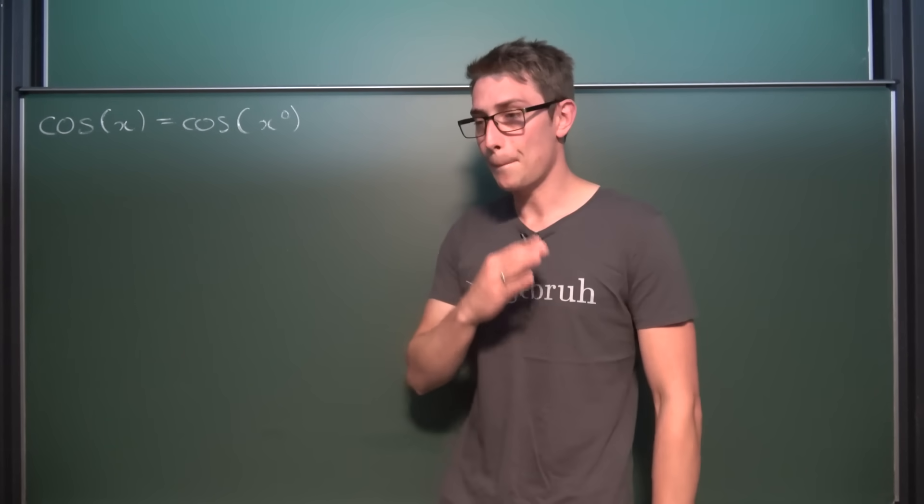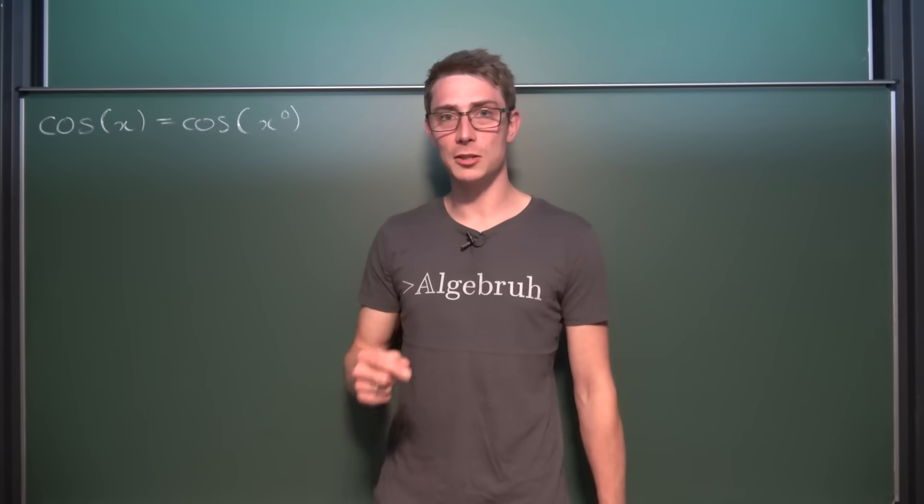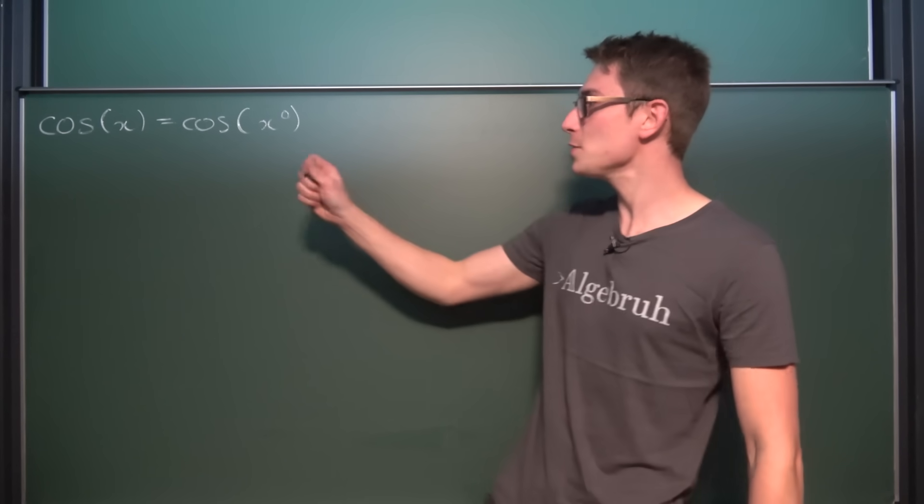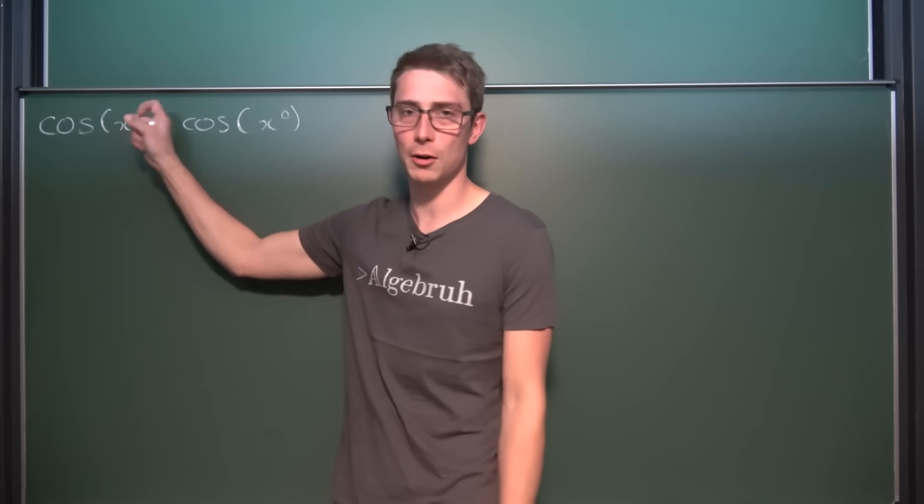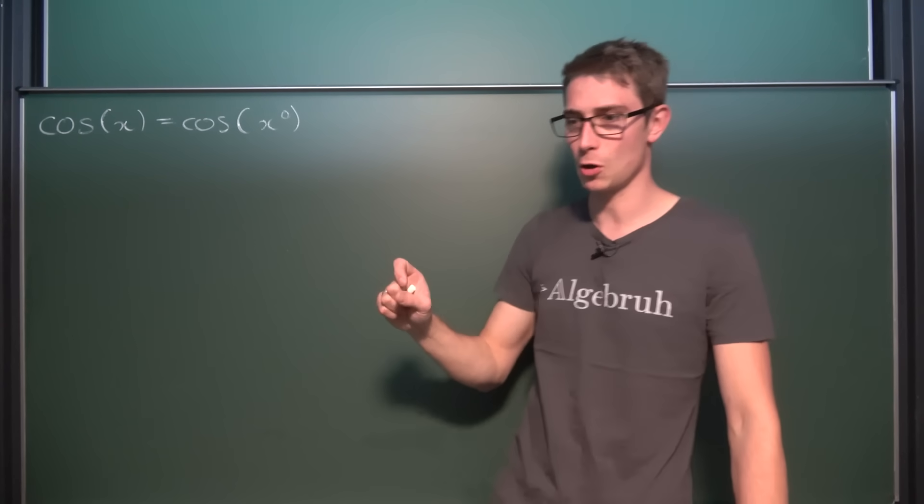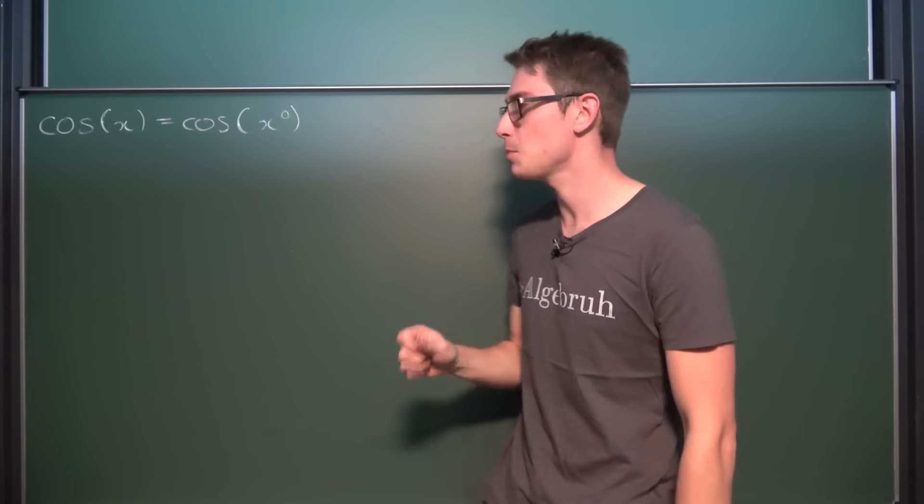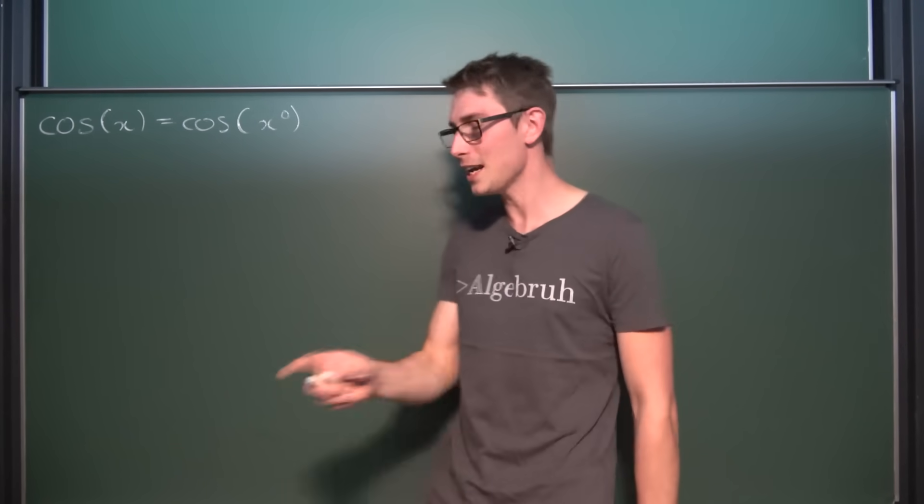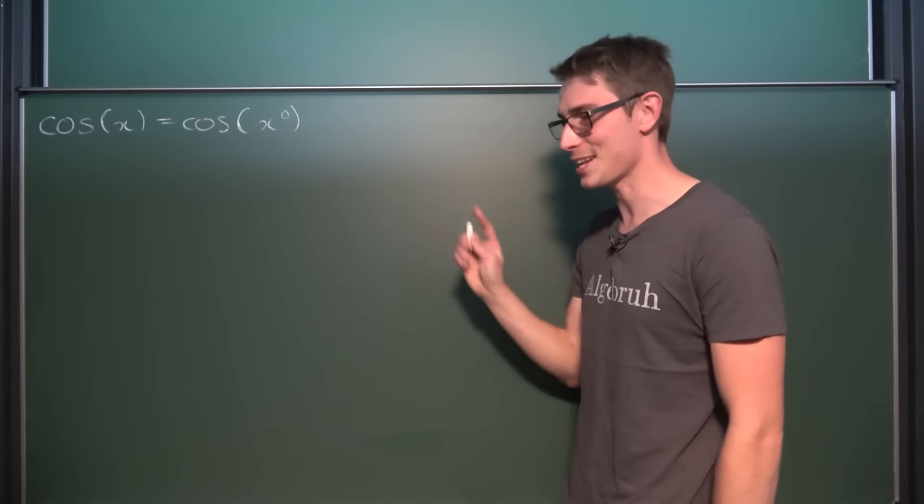To get rid of this pesky little problem, I decided to only use values now in my tests where the cosine of radians is equal to the cosine of degrees. I can't be bothered to be annoyed by that anymore. And now we're going to find out when this is actually equal.